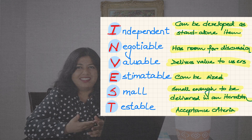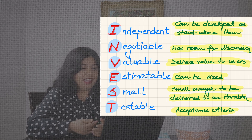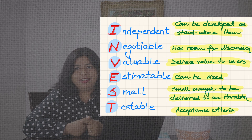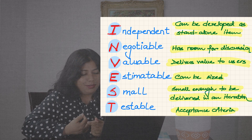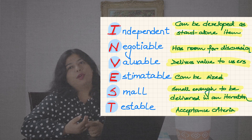INVEST stands for: Independent, Negotiable, Valuable, Estimatable, Small, and Testable. Even though Testable comes last, it is one of the key things that determines whether a user story is ready or not.